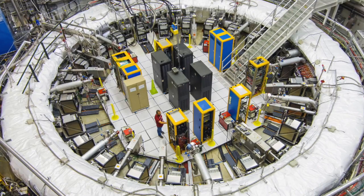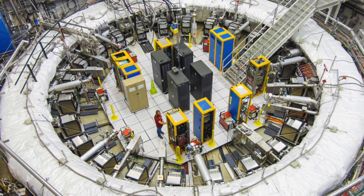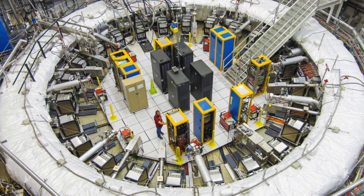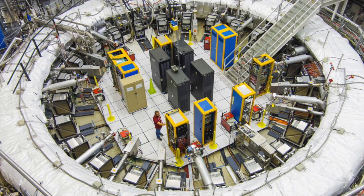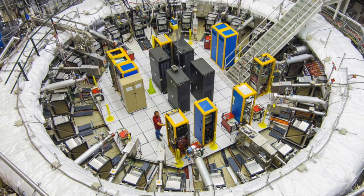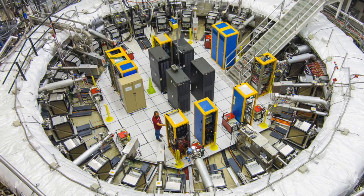Muons are similar to electrons, but about 200 times as massive. Like electrons, they're charged and they spin, which makes them act like tiny magnets, and wobble like spinning tops when placed in a magnetic field.